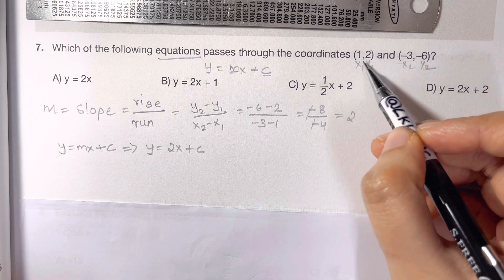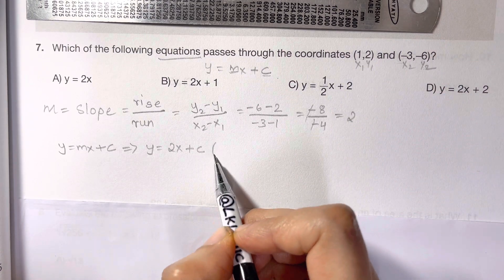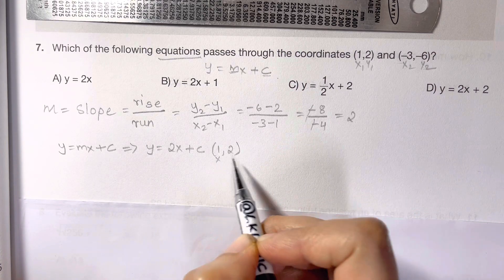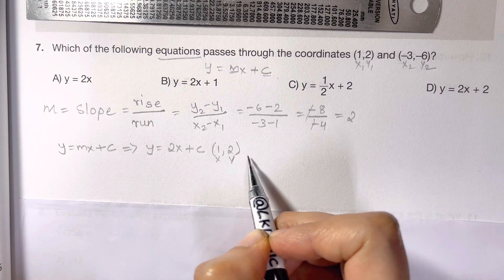Now we are going to choose any point, either of them (1,2). Let's choose (1,2) and put it in this equation as x and y.